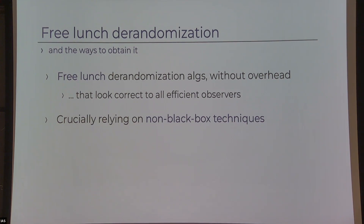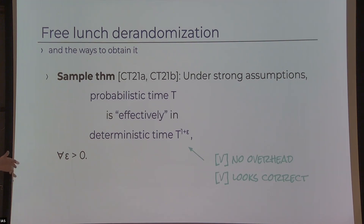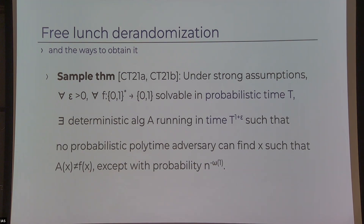These free-lunch theorems crucially rely on the new framework of non-black-box techniques — you can't get them with the classical approach. In a work with Ligio Chen, under strong assumptions, probabilistic time t is effectively within deterministic time t-to-the-(1+ε), where ε can be as small as you want. This holds for every algorithm running in time t, and also in the setting of explicit constructions. No efficient observer can find a place where the new deterministic algorithm disagrees with the original probabilistic one.